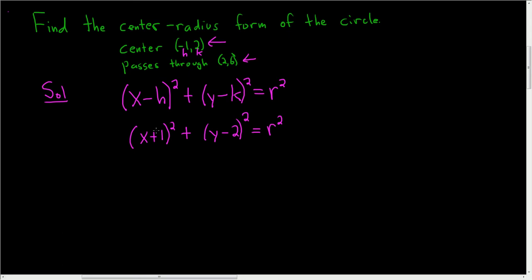The only thing we have to do is find r. Now we're told that our circle passes through this point. That means it should satisfy this equation. So we'll replace x with 2 and y with 6.